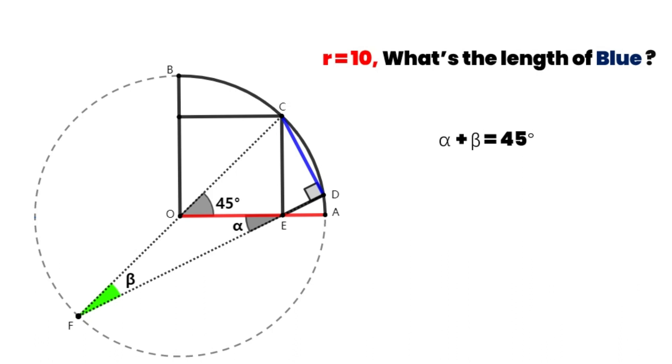When alpha plus beta is equal to 45 degrees, there is a special relationship between tangent alpha and tangent beta. If tangent alpha is equal to A over B, then tangent beta is equal to B minus A over B plus A.